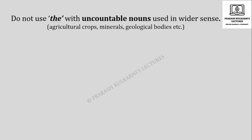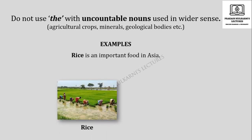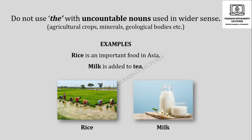Do not use THE with uncountable nouns used in a wider sense — for example, agricultural crops like wheat, rice, and ragi; minerals like iron ore, manganese, and platinum; geological bodies like soil and stone. 'Rice is an important food in Asia' — here rice is used as an uncountable noun with wider sense. 'Milk is added to tea' — milk and tea are uncountable nouns.